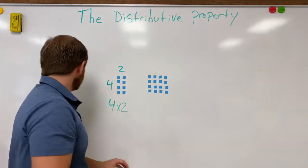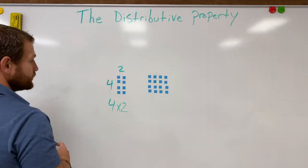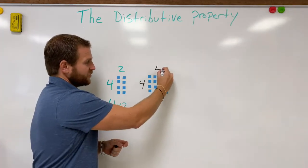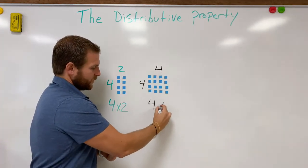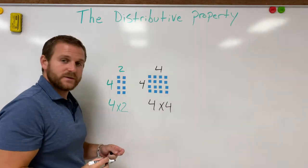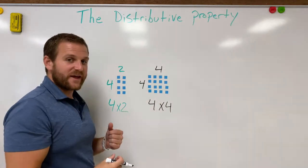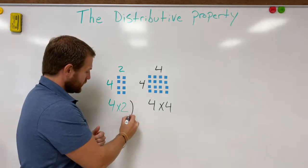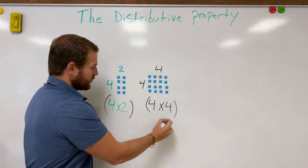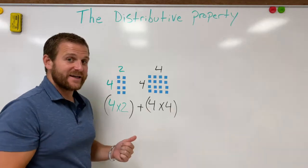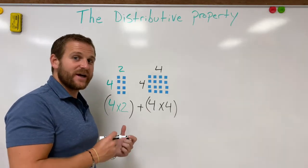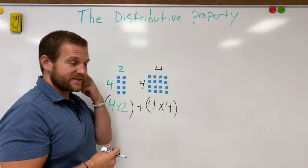And over here, we have four times four. So now we have these two together and we still have the total number of unit cubes. So what we can do is put both of these in parentheses and add them together and it should get us the same total we got as four times six. So let's go ahead and take a look at that math and see if it all adds up.